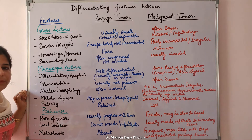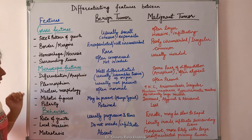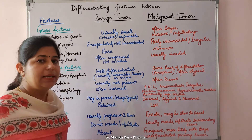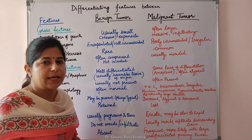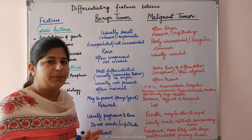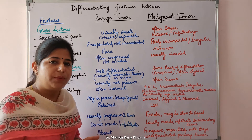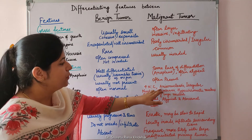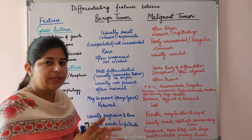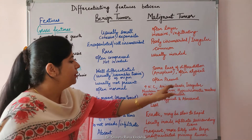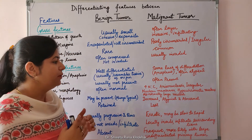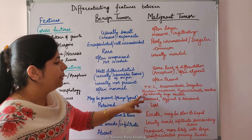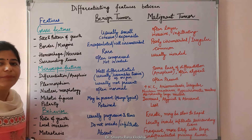Nuclear morphology is often normal in benign tumors. Whereas there is abnormal nuclear morphology in malignant tumors. There is an increase in nucleus-to-cytoplasm ratio, which can approach 1:1. The normal NC ratio is 1:4 to 1:6. There is anisonucleosis — variation in the size of the nucleus — irregular nuclear membranes, hyperchromatic chromatin, and abnormally large nuclei may be seen.